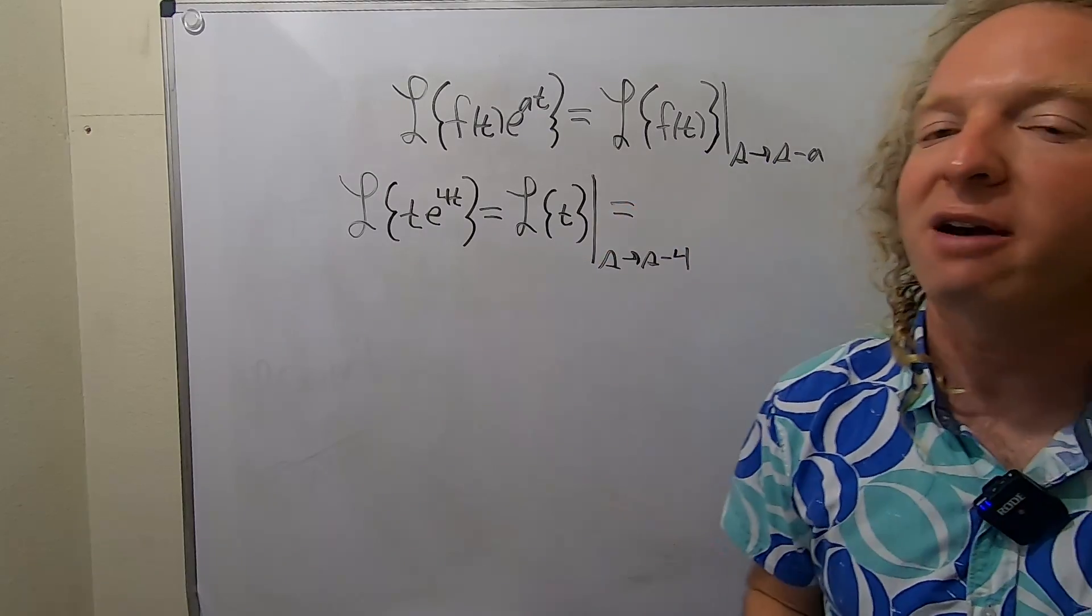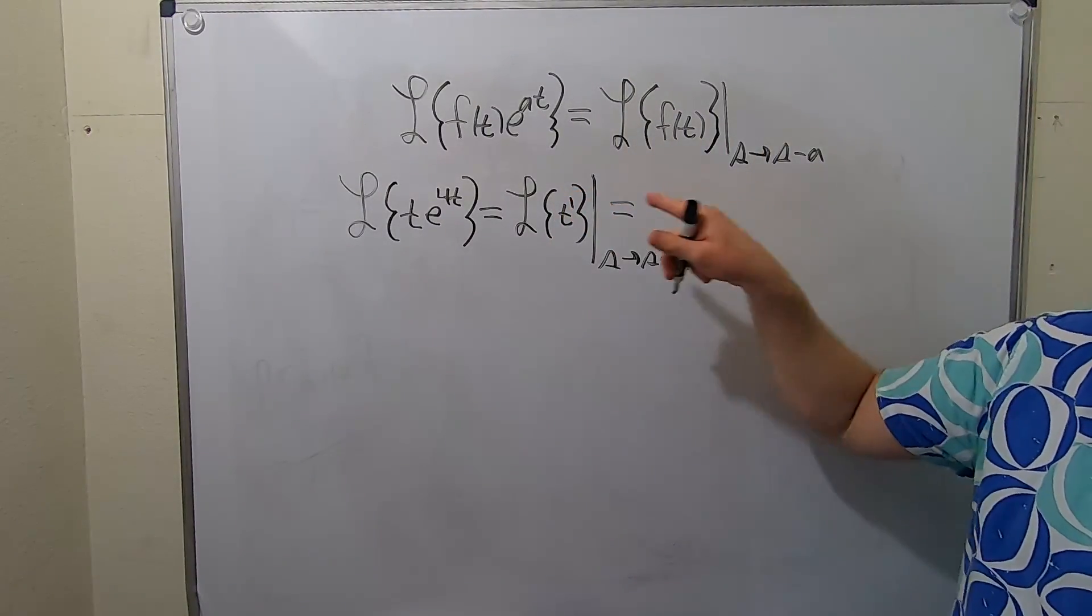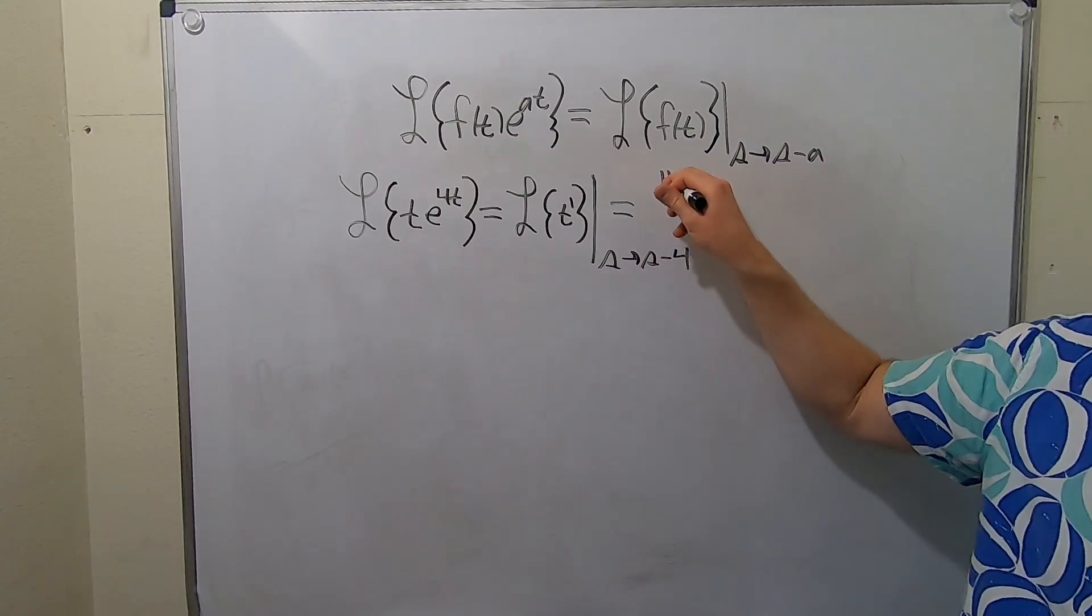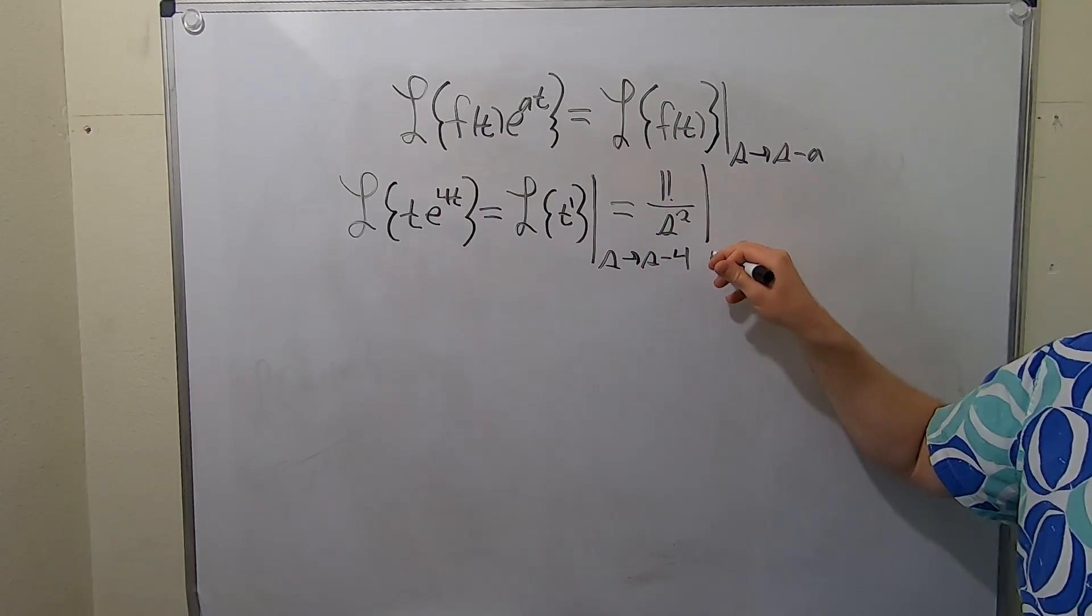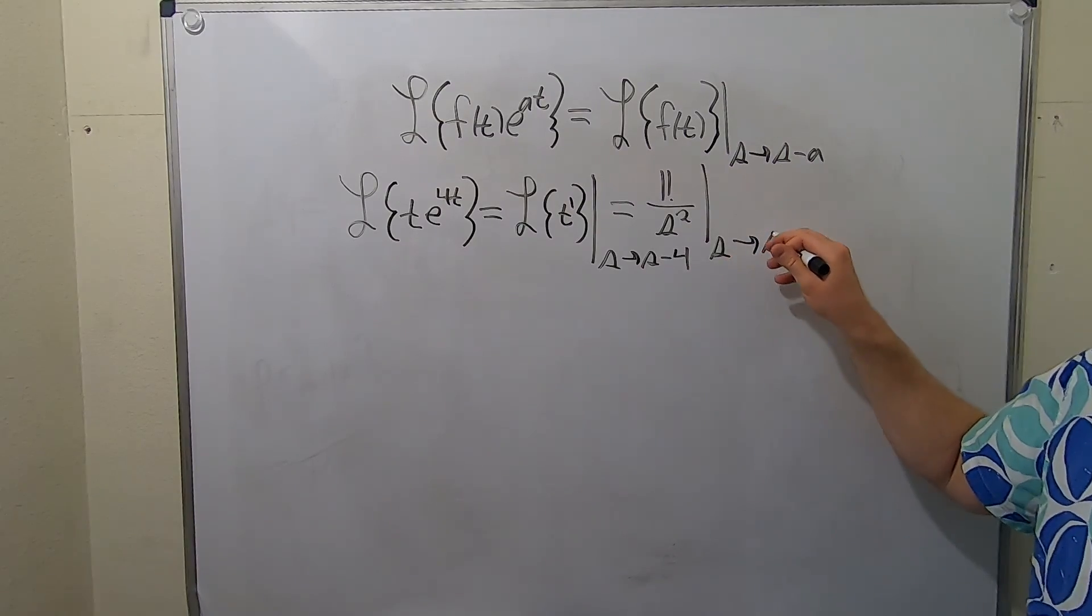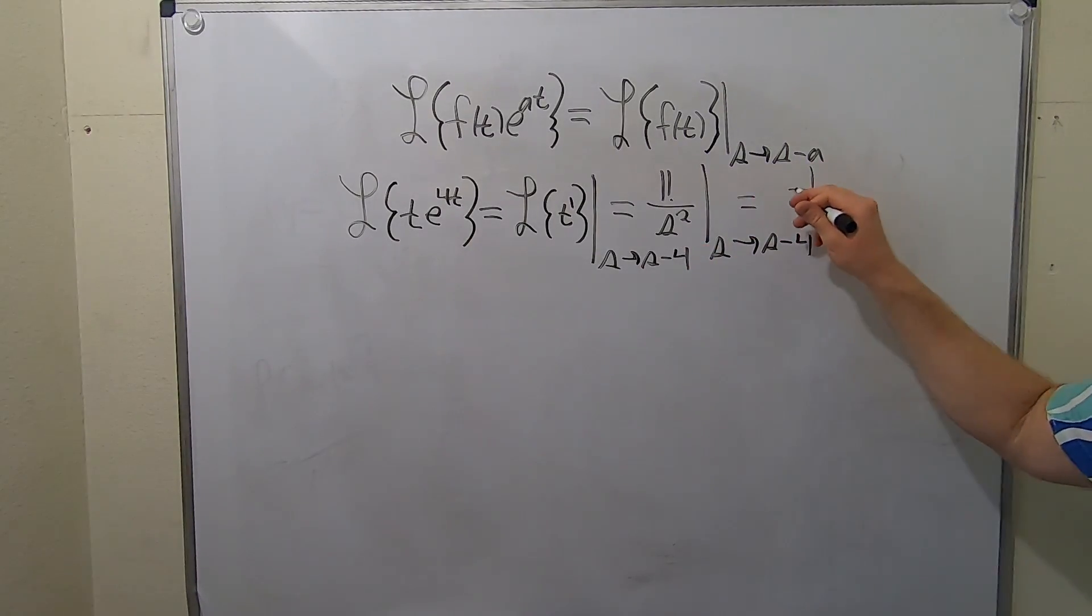And then you know that when you have the Laplace of t, there's a 1 here. And it's always that number factorial, so 1 factorial, and it's 1 higher on the bottom. And then you go from s to s minus 4. So that would be 1 over s minus 4 squared. So that's the regular way of using the first translation theorem.